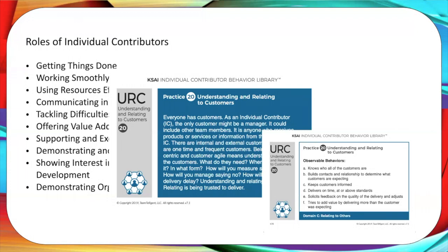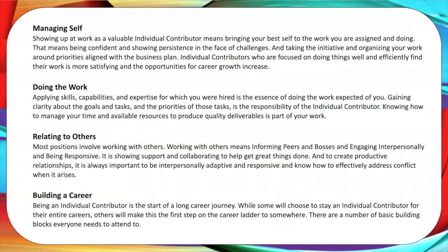In our system, we have cards for every single role and every single practice. In this particular example, 'Understanding and Relating to Customers,' identified under Getting Things Done, was the most difficult to learn. We have a narrative that gives the frame of reference for why this practice is important, and then some very specific behaviors help guide a person to understand what he or she needs to do in order to fulfill that practice.